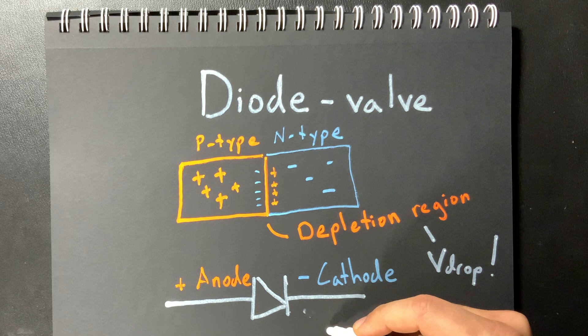In fact you can actually tell a lot about the material that's used in the diode by looking at what that voltage drop is in the depletion region. So for silicon that voltage drop is usually between 0.5 and 0.8 volts whereas for germanium it's about 0.2 to 0.3 volts.